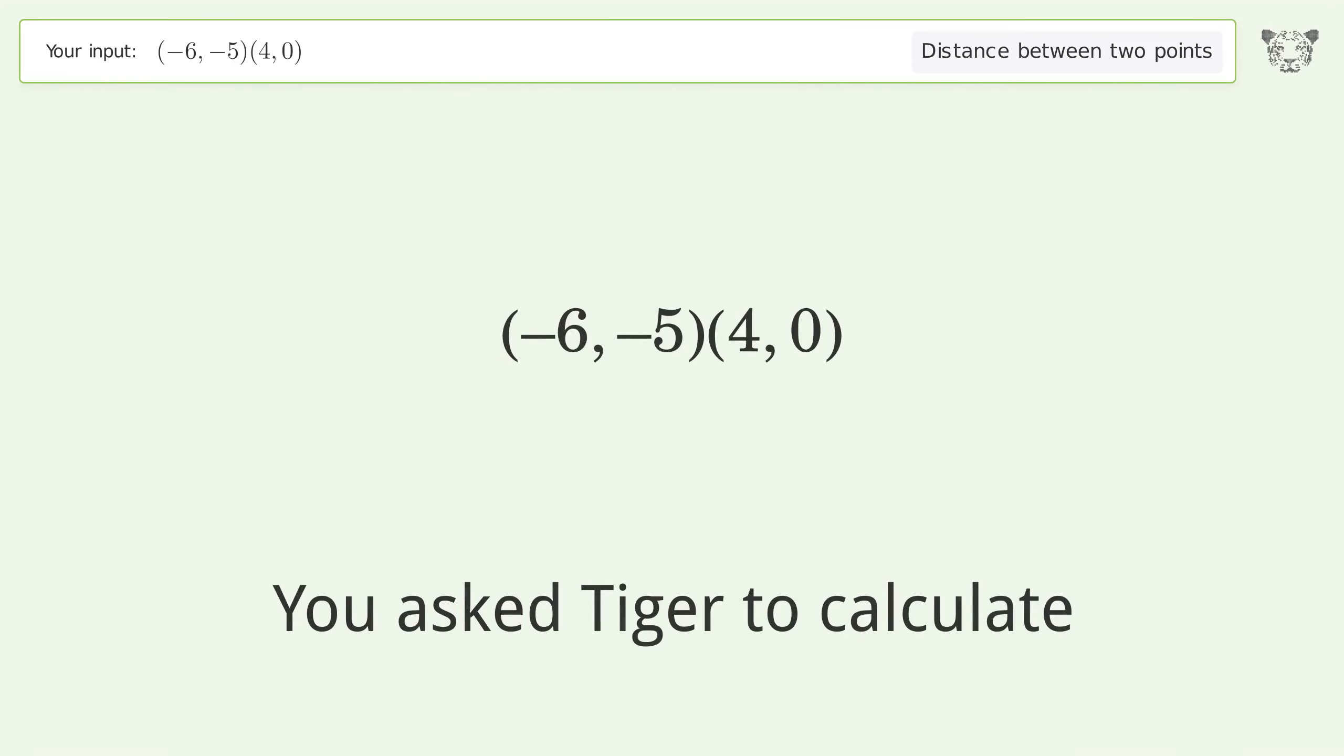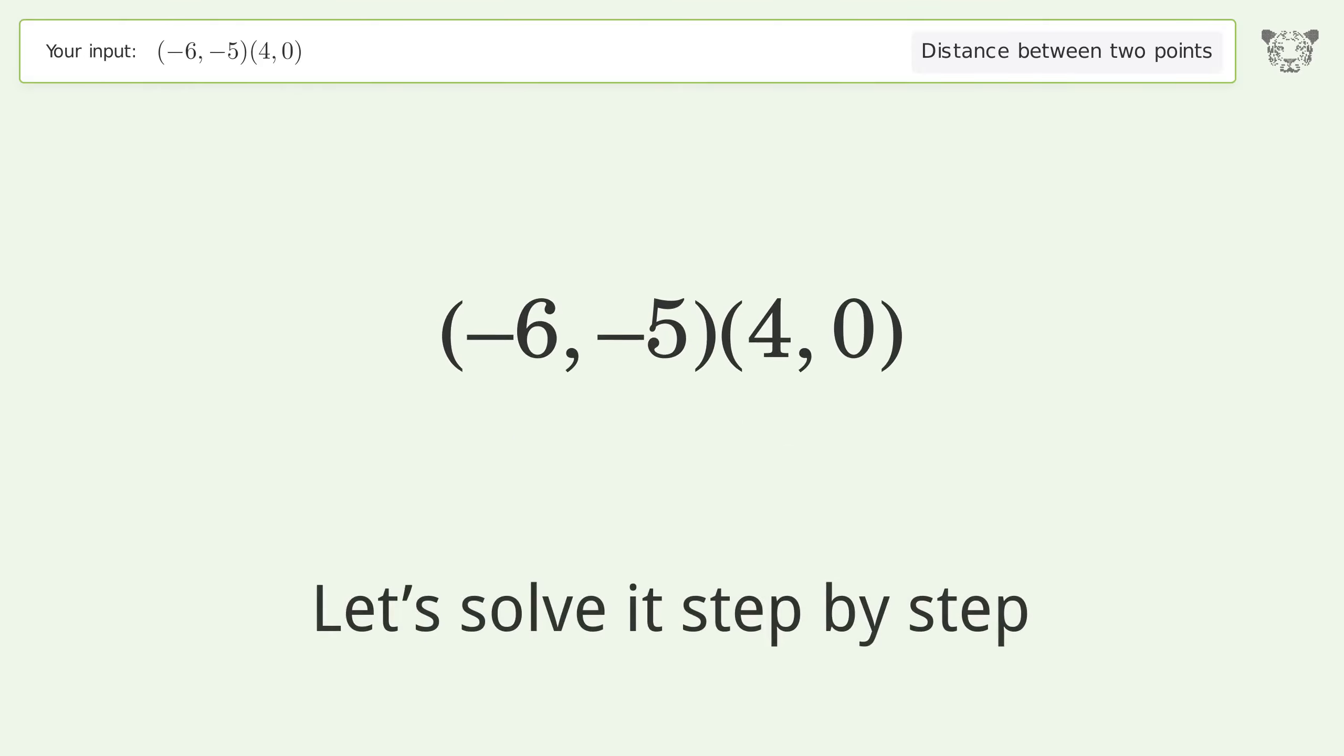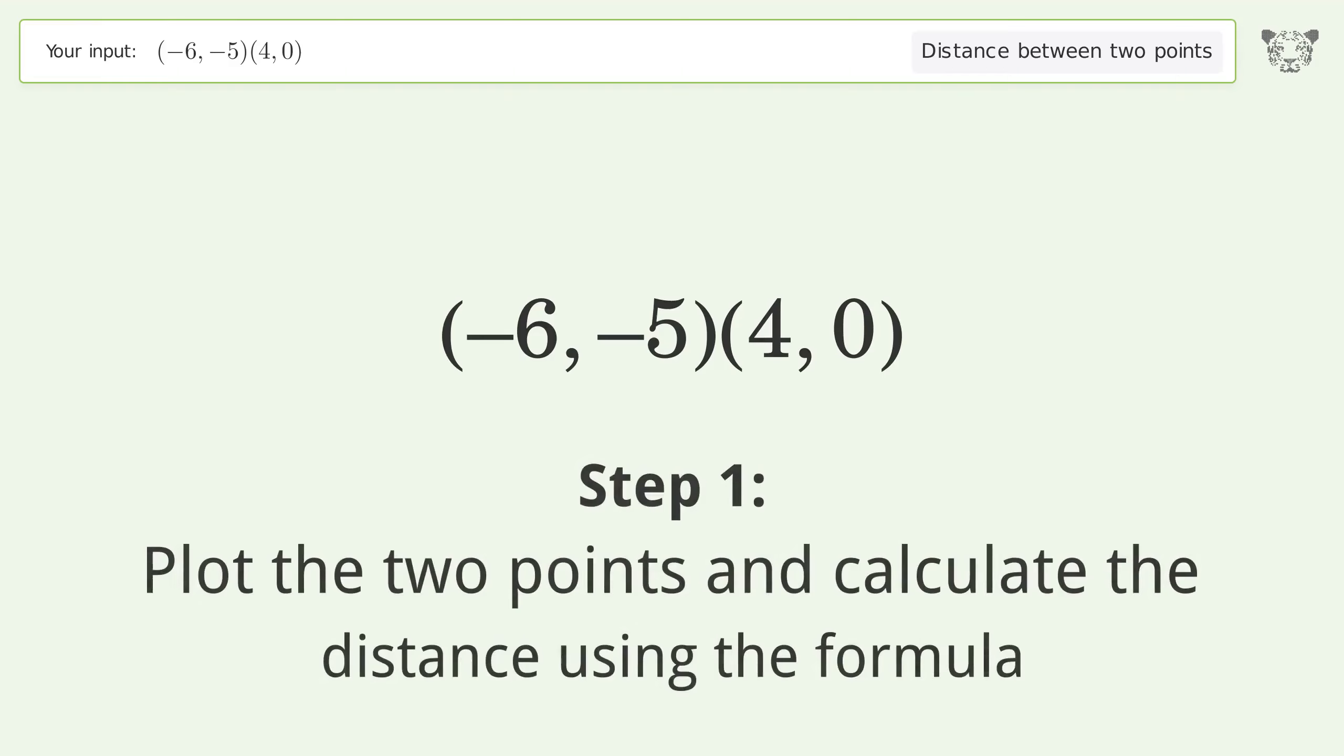You asked Tiger to calculate the distance between two points. The distance between the two points is the square root of 125, or 11.18. Let's solve it step by step. Plot the two points and calculate the distance using the formula.